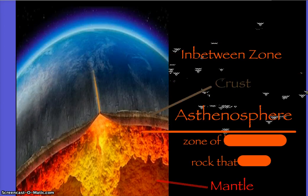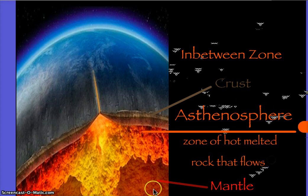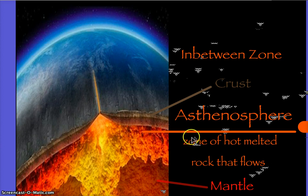So we have the center, which is the core; the mantle, which is the middle; and the crust, which is the top. But the mantle, which is primarily liquid rock called magma, flows like a river — and we call that flow of magma the asthenosphere. So here's the mantle, full of liquid rock, and when that rock rises and starts to flow, it's almost like a river; they call that the asthenosphere.